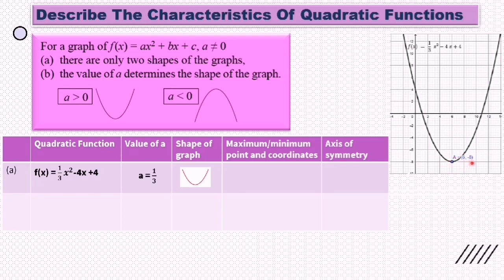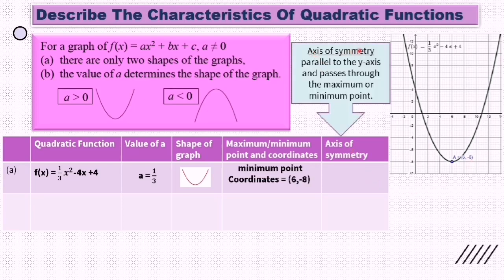The coordinate of the minimum point is (6, -8). The axis of symmetry is parallel to the y-axis and passes through the maximum or minimum point. If I draw a line passing through the minimum point here, the axis of symmetry is x = 6.